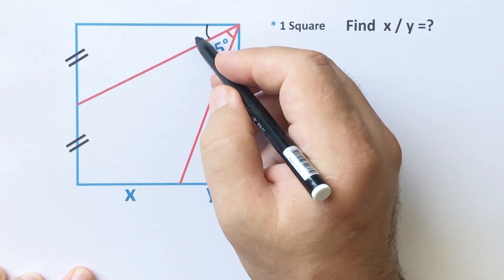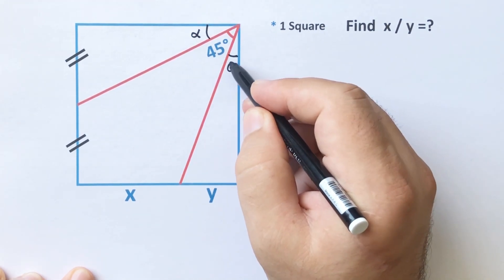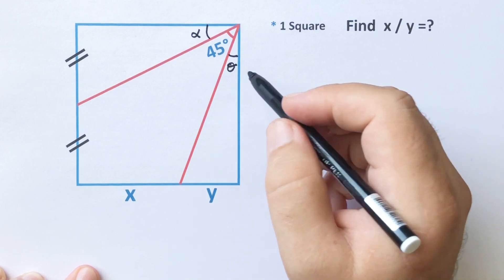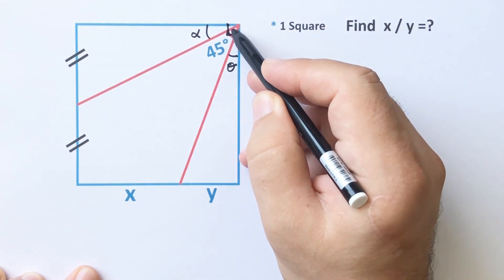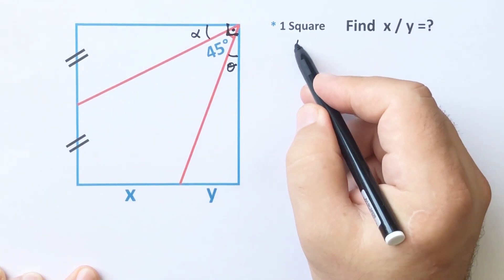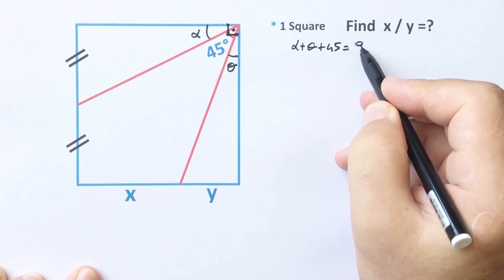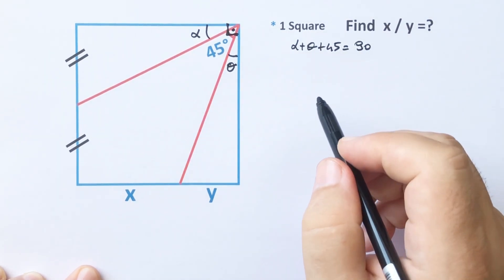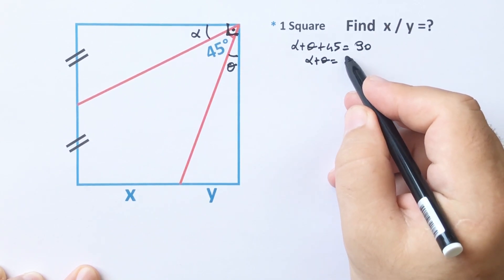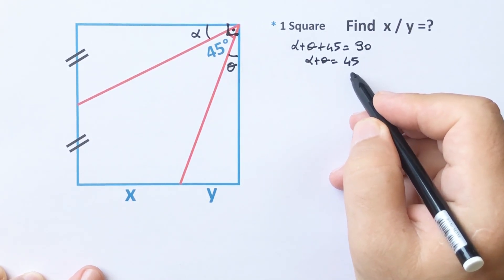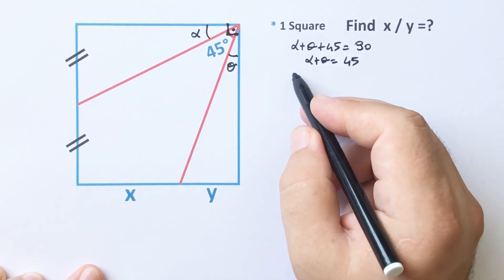First step, let's call here alpha and this length I'm going to call theta. We know that here is 90 degrees — a right angle — so alpha plus theta plus 45 degrees equals 90 degrees. That means alpha plus theta equals 45 degrees.